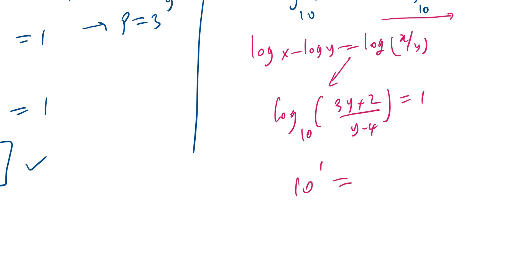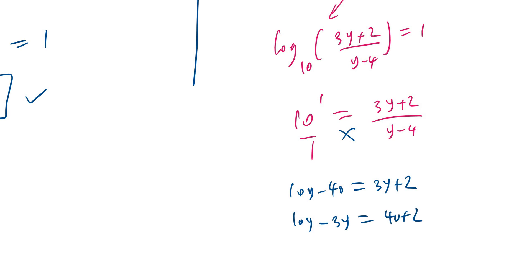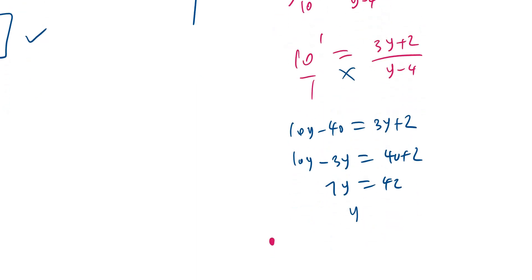Expressing in exponential form: 10^1 = (3y + 2)/(y − 4). Cross multiply to get 10y − 40 = 3y + 2. So 10y − 3y = 40 + 2, giving 7y = 42, therefore y = 42/7 = 6. So y equals 6.